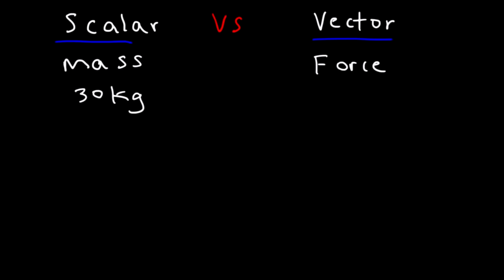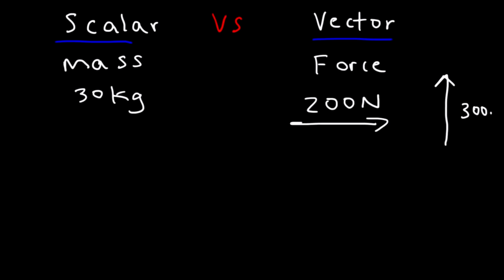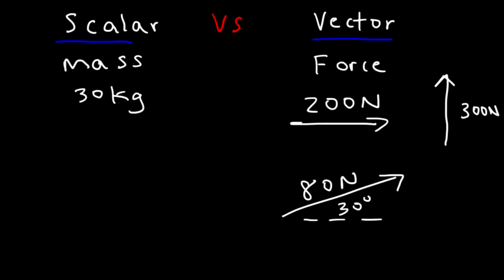Force is a vector quantity. I can push an object with a force of 200 newtons directed east, or I can lift up an object with a force of 300 newtons directed up. So force has a magnitude and direction. If I direct a force of 80 newtons at an angle of 30 degrees above the x-axis, the magnitude is the 80 newtons and the 30 degrees is the direction.